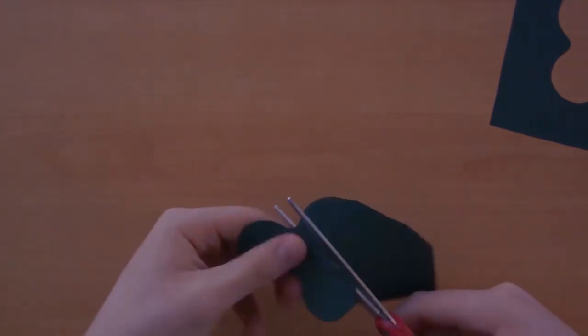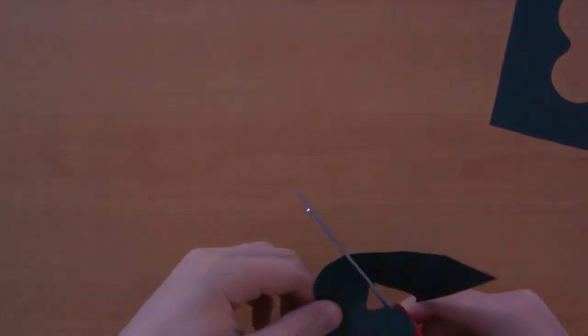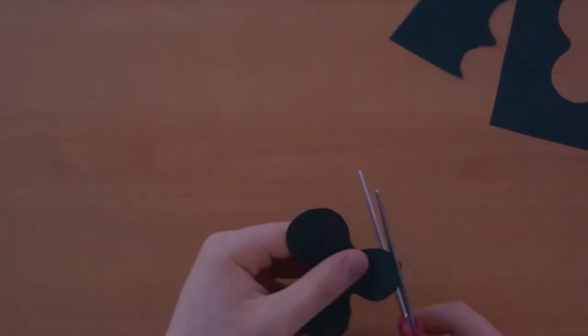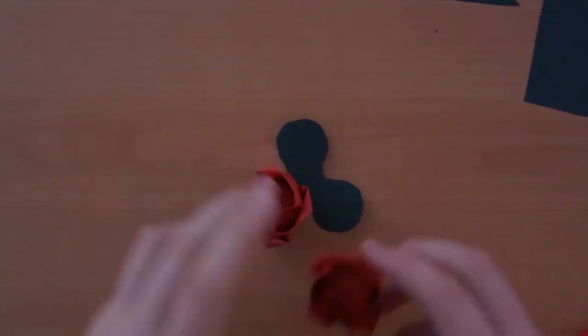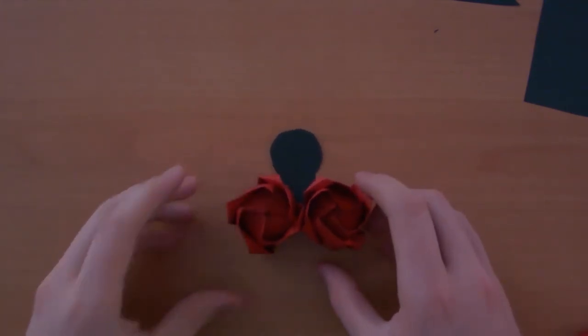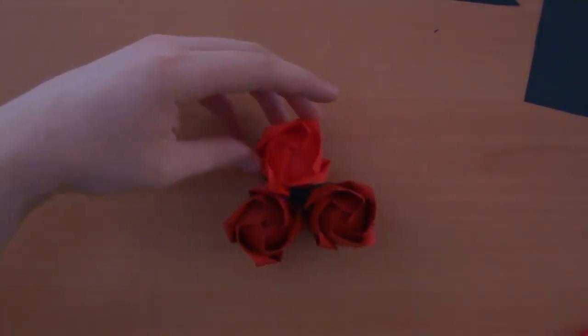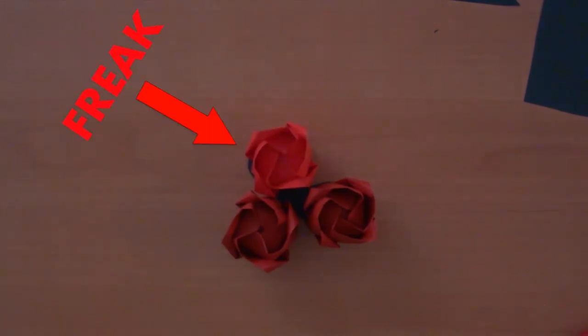Don't worry about these circles being the exact same size just make sure that they're not bigger than the bases of the roses. If they're smaller that's fine. This is when it'll be good to take your roses and for a comparison shot place them on top. And yes there's an oddball. I was out of the same colored paper okay.